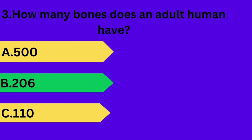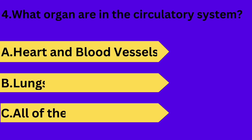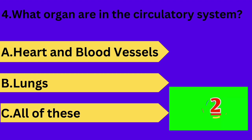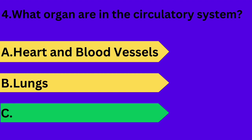And next question is: what organs are in the circulatory system? Option A: heart and blood vessels. Option B: lungs. Option C: all of these. Your time starts now. Answer is option C: all of these.